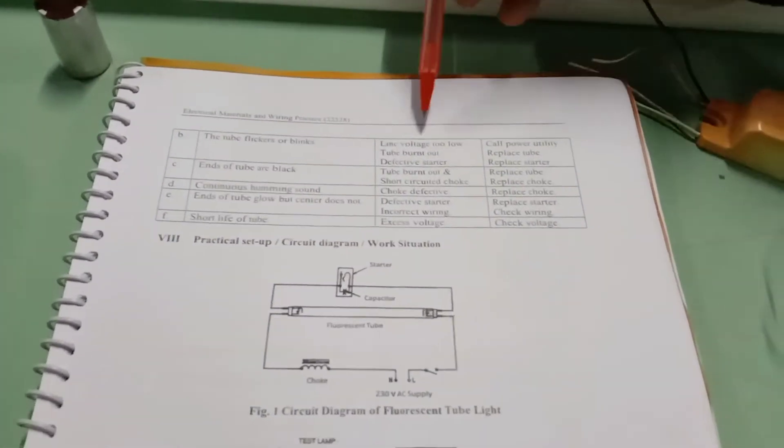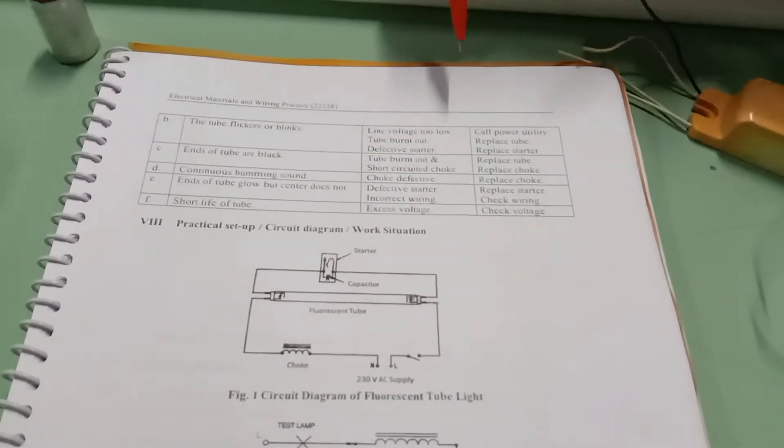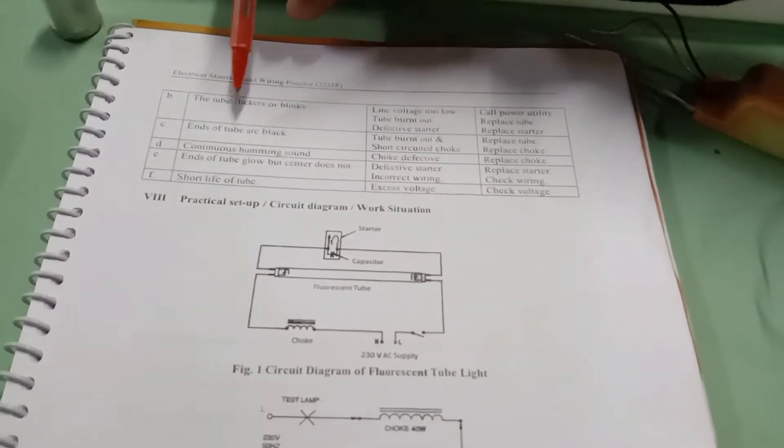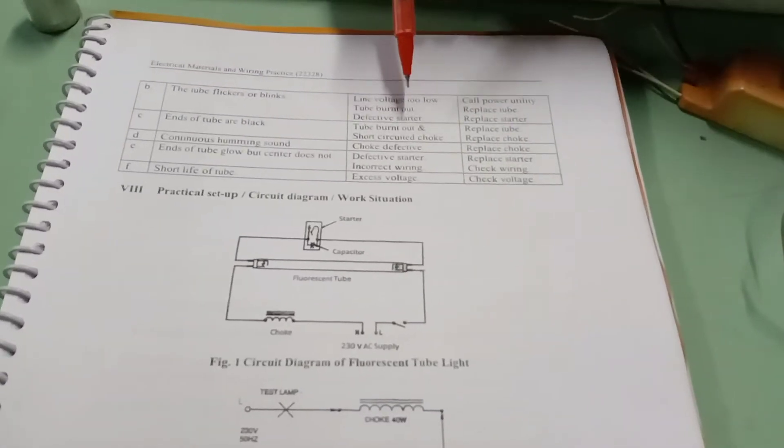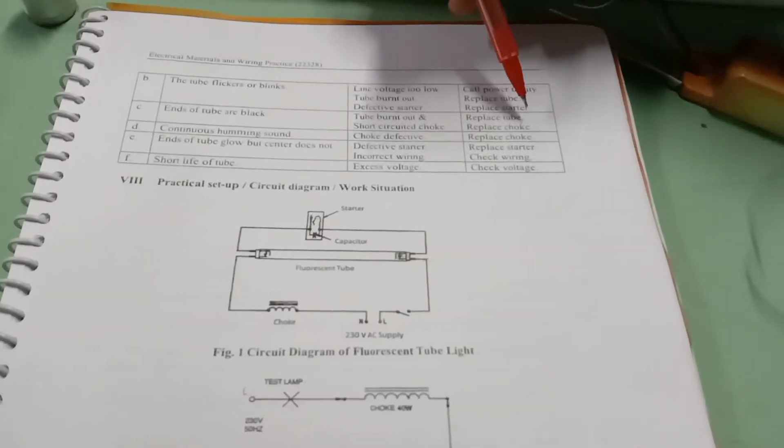If the tube light flickers or blinks it means the line voltage is too low. These are the different remedies and we have to work on it. If the end of tubes are black means tube burnout and short circuited choke. We have to replace that choke.